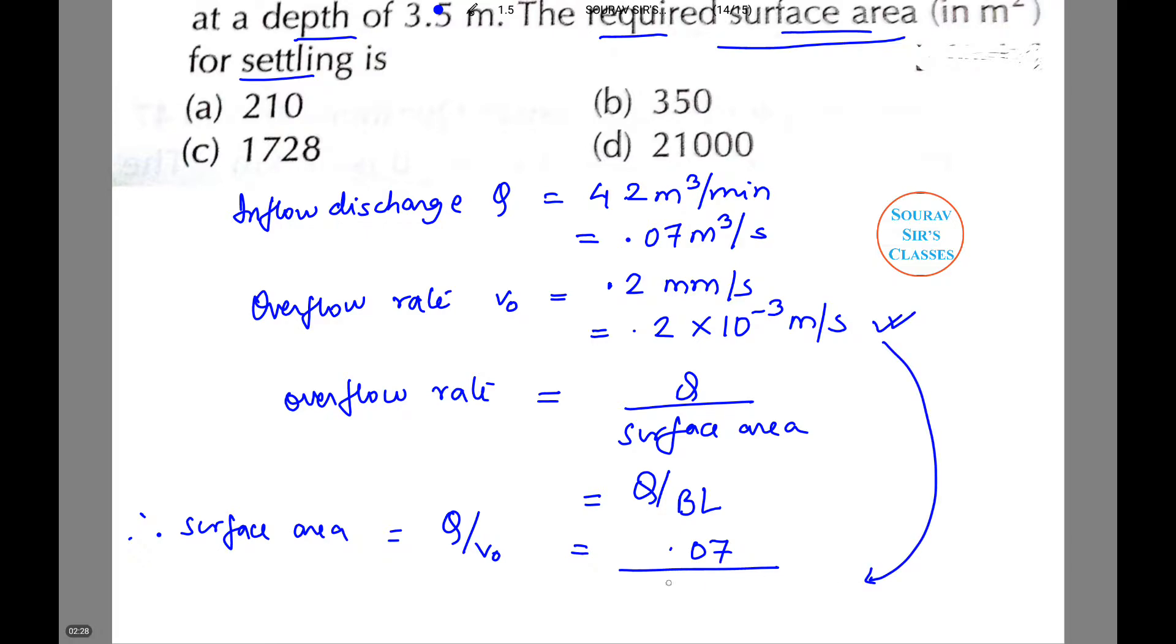So it is 0.2 into 10 to the power of minus 3, and this will give me 350 meter square.